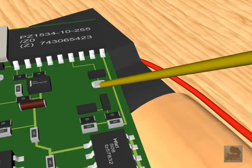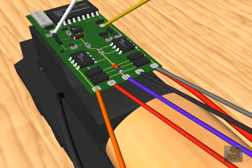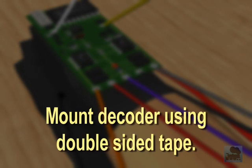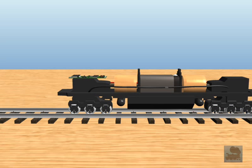At this point, you should be able to run your engine with the newly installed decoder. Most of the DCC decoders come with a default address of three. We will use this address to run the engine. Place the engine on the track.